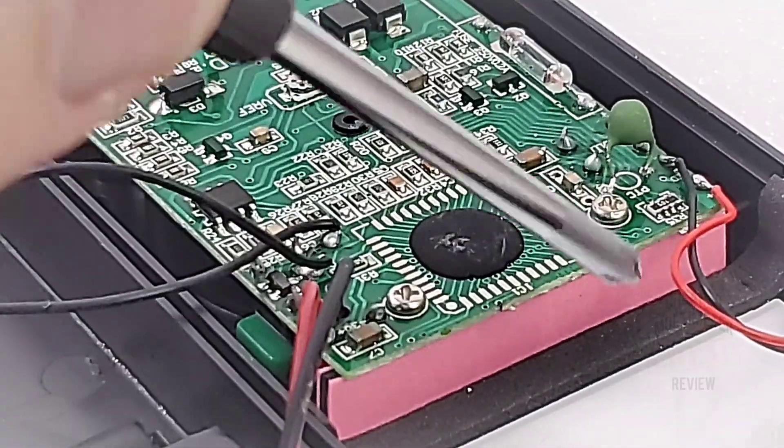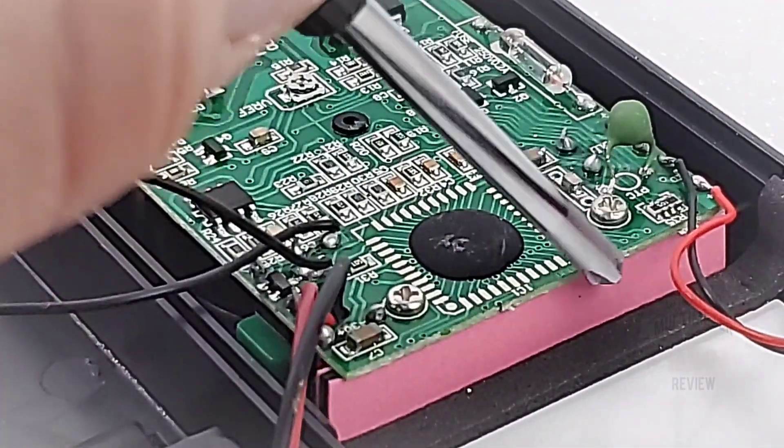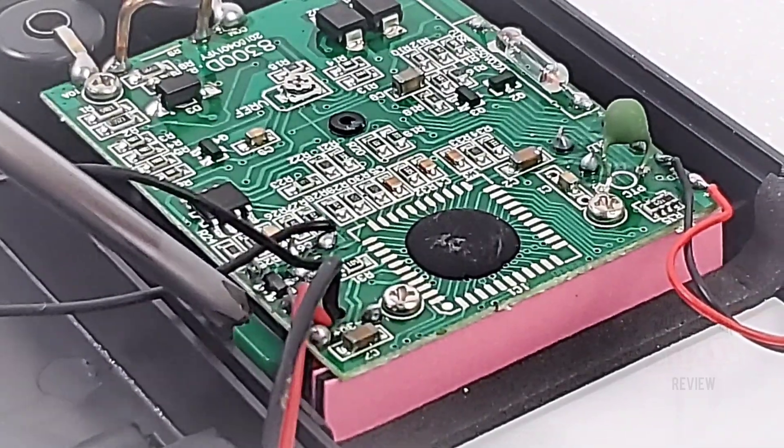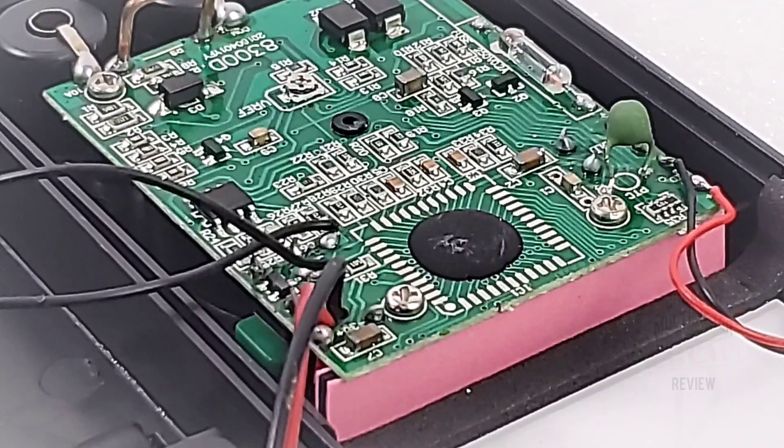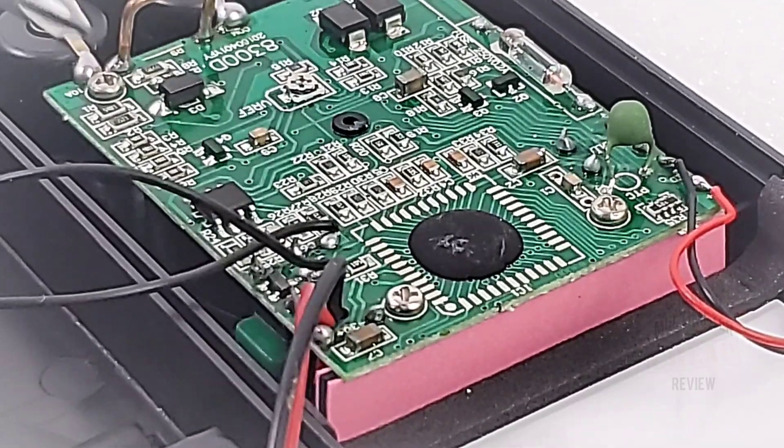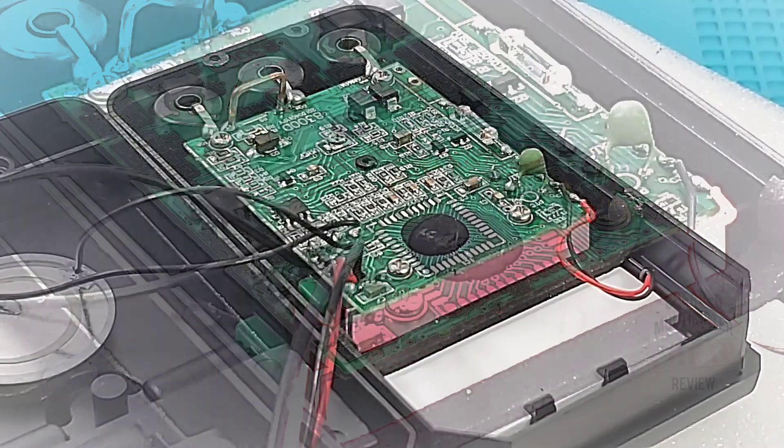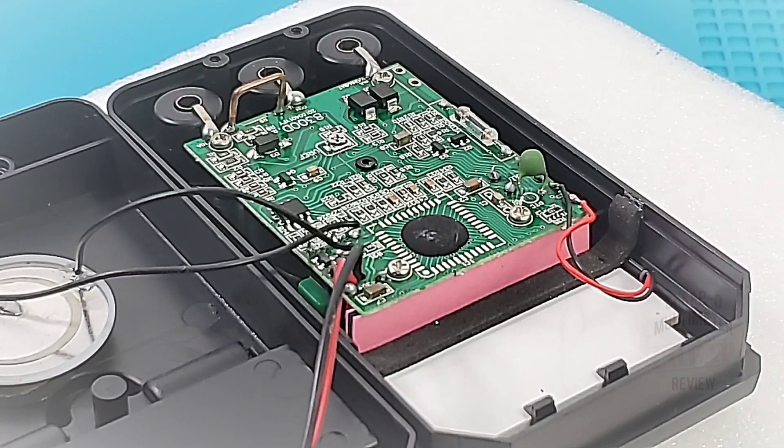At the top of the meter nothing special going on. There's our zebra strip over here that feeds the LCD display. Just your basic connectivity going on here. So all in all, it is a cheapo, really tiny PCB. We're gonna put everything back together and come back with my closing thoughts.